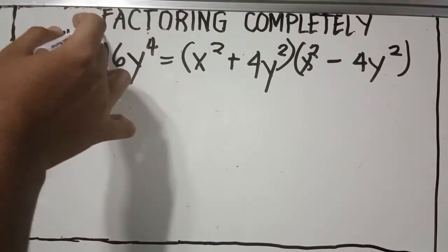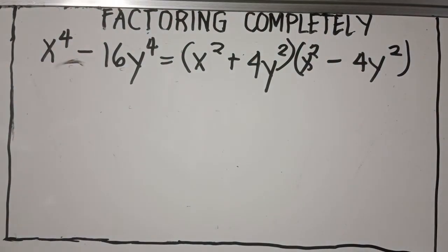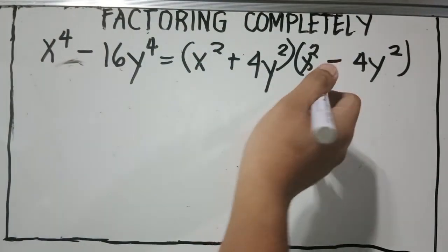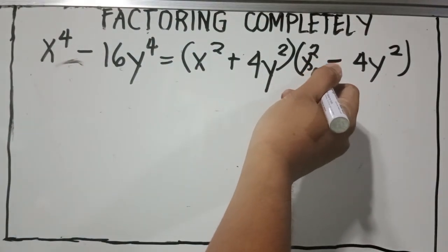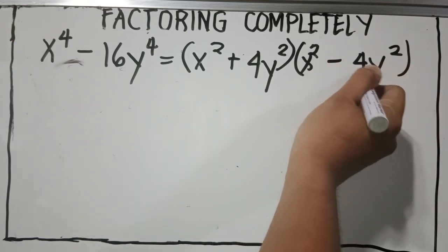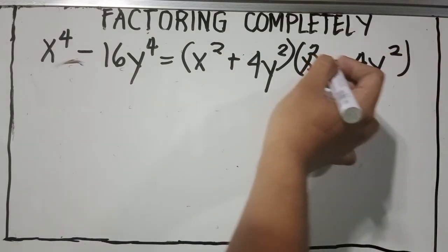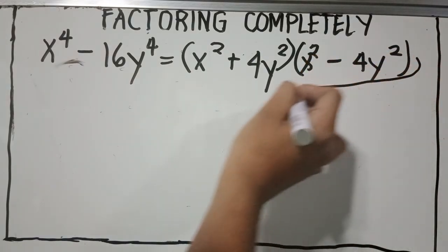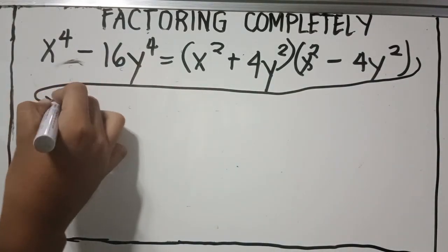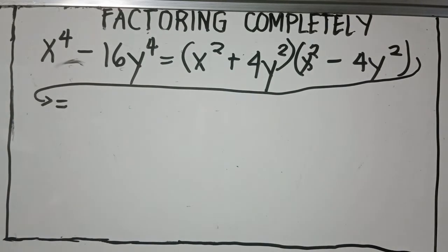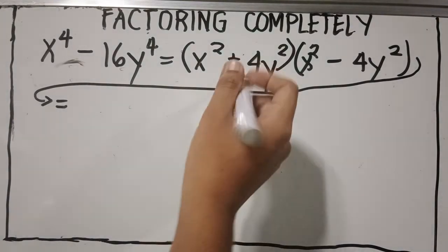But take note — since the instruction says to factor completely, we must check if any factor is still factorable. x² − 4y² is still factorable because x² is a perfect square, 4 is a perfect square (square root is 2), and y² is also a perfect square. So we need to factor x² − 4y² again to arrive at a final answer.